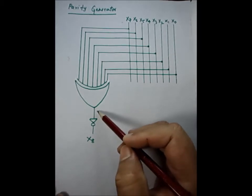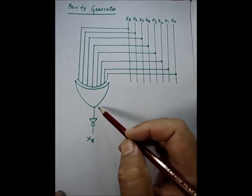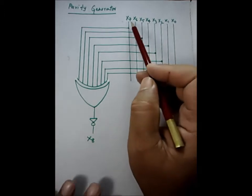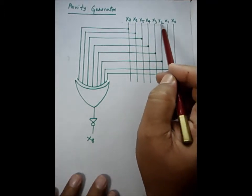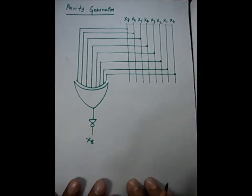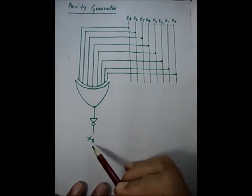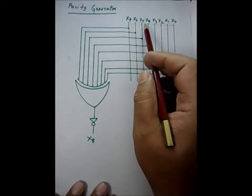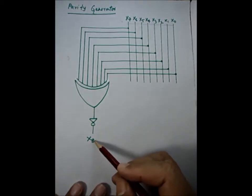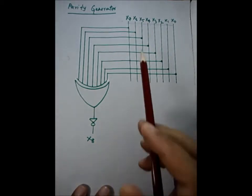In this particular circuit, we have x0 to x7 — there are eight bits in the original stream of bits — and x8 is the one bit that is generated according to the input. Now, what is the significance of x8? We will discuss that now.